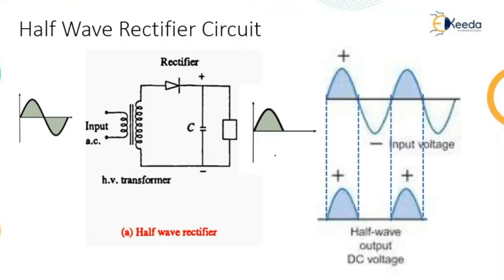Consider the circuit where there is a high voltage transformer. The input to this transformer is alternating — the alternating waveform has a positive half and negative half, giving positive and negative peaks in one sinusoidal waveform. This sinusoidal waveform is given as input to the primary side of the transformer. The secondary side is the high voltage side, where a rectifier is placed.